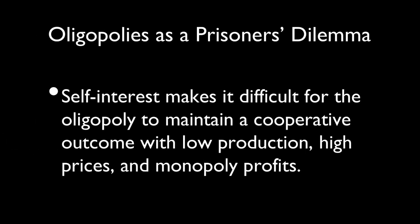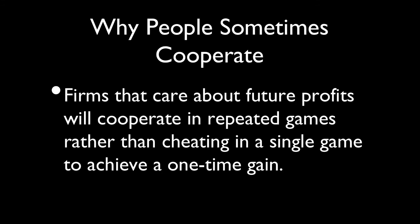Oligopolies are a lot like prisoner's dilemmas in that self-interest makes cooperation difficult to maintain. It's hard for firms to cooperate when there's an incentive — some extra profit — to not cooperate. You can sometimes ensure cooperation if firms care more about future profit than one-time profit, and the key is the game has to be repeated. Coke and Pepsi are a great example: it's really against their interest to get into a price war. They want to compete for market space but don't want to slash prices until they drive one another out of business. As a consequence, Coke and Pepsi engage in non-price competition instead.